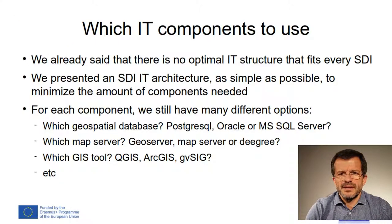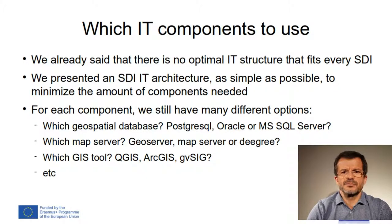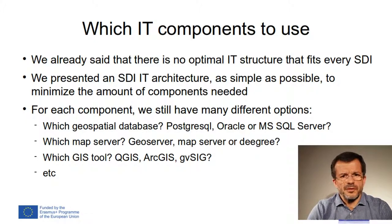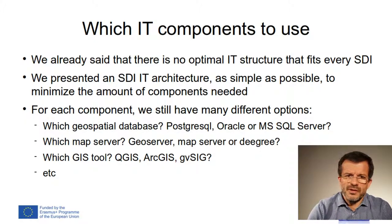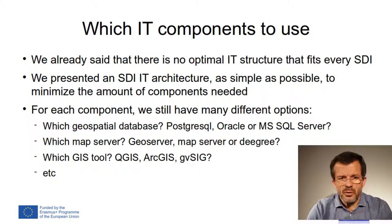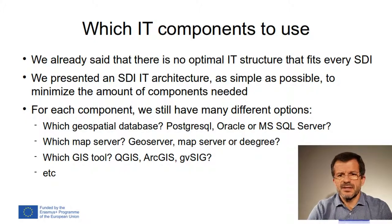We already said that there is no optimal IT structure that fits every SDI. We presented an SDI IT architecture as simple as possible to minimize the amount of components needed. But for each component, we still have many different options. Which geospatial database to use? Postgres, Oracle, Microsoft SQL Server. Which map server? GeoServer, MapServer, or Degree. Which GIS tools? QGIS, ArcGIS, gvSIG.